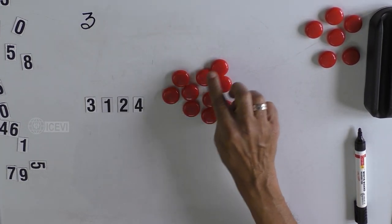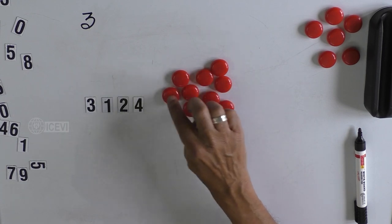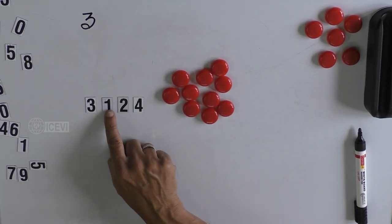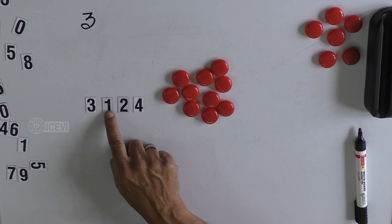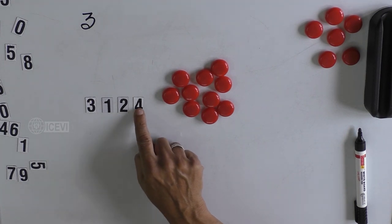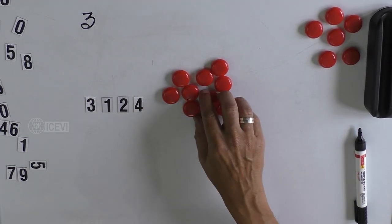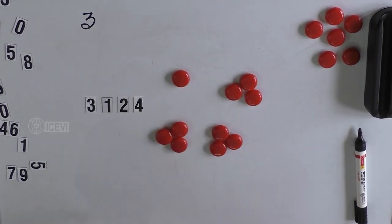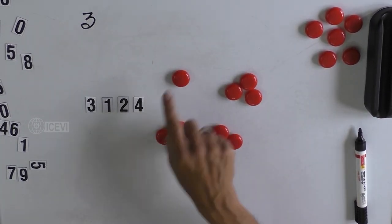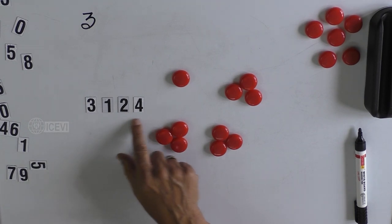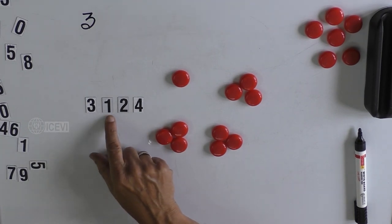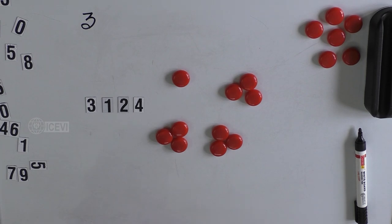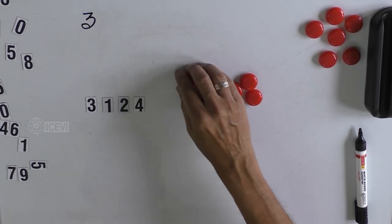If the child is able to do it mentally, that is also fine. Now, counting the beads: 1, 2, 3, 4, 5, 6, 7, 8, 9, 10. So you add: 3 plus 1 is 4, 4 plus 2 is 6, 6 plus 4 is 10. Now you group them in terms of 3 and you get 1 as a remainder. So you can straight away say that 3124 is not divisible by 3.